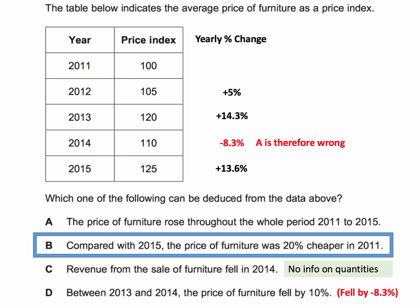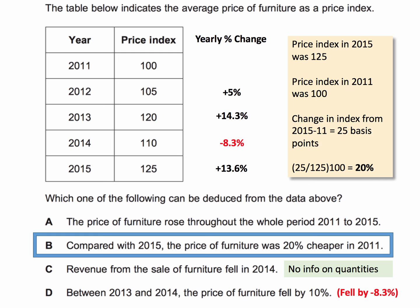By a process of elimination the right answer is B — A, C, and D must be wrong. But just to confirm: the price index in 2015 was 125; the price index in 2011 was 100. The change over that four-year period going back is 25 points on the index. 25 divided by the original 125, times 100, gives a 20% change. So indeed, furniture in 2015 was 20% cheaper than in 2011 when looking back from 2015 to 2011.